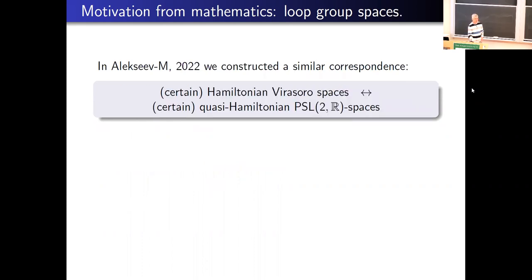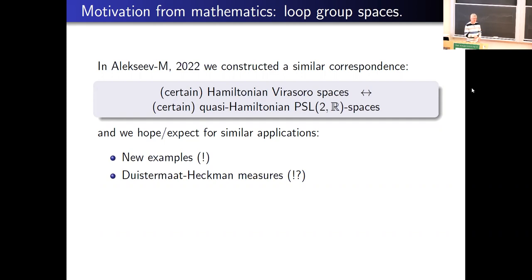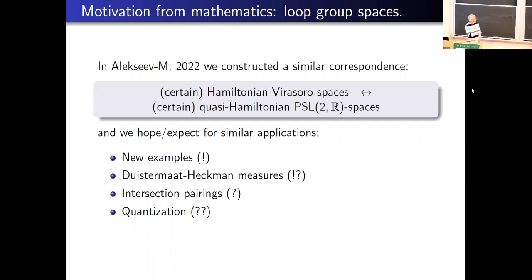Basically what we want to do now is get something similar for Virasoro. In this preprint we just posted, we obtain a correspondence between certain Hamiltonian Virasoro spaces and certain quasi-Hamiltonian spaces for the group PSL(2,R). We're hoping to get similar applications: new examples of Hamiltonian Virasoro spaces, a Duistermaat–Heckman theory making the physicists' work more rigorous, intersection pairings, and maybe quantization. PSL(2,R) is finite-dimensional, which is good, though it's non-compact — so there are still some problems, but it's a very simple non-compact group.